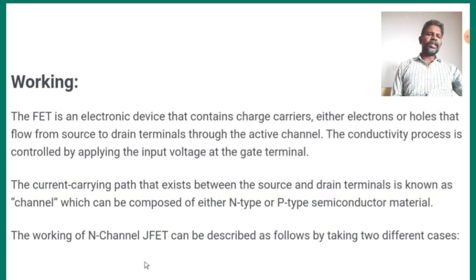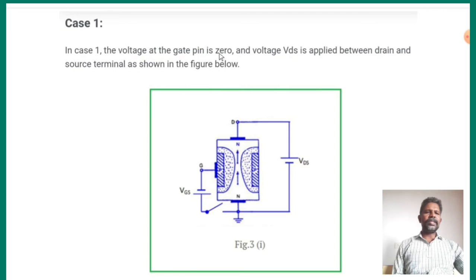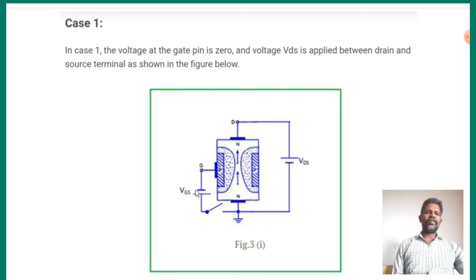The working of N-channel JFET can be described as follows, taking different cases. In case 1, the voltage at the gate pin is 0. VDS is applied between drain and source. VDS is the voltage between drain and source, and VGS is the gate-source voltage.